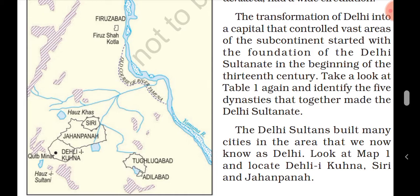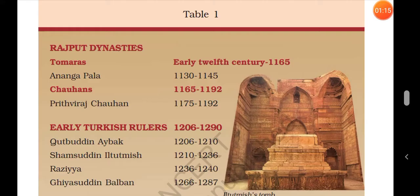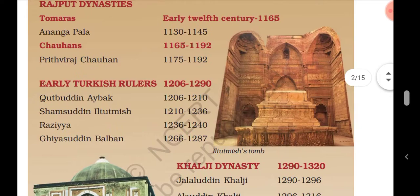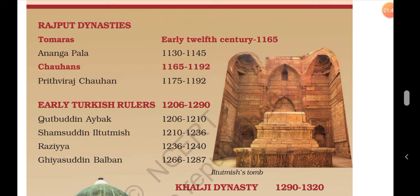Look at this map. Here you can see Delhi, Ikunha, Siri, and Jahanpana — these are some main cities built by the Delhi Sultans. There is also a table in your book, Table 1, which you have to make in your notebook. In this table you can see the names of those sultans who ruled over Delhi and the dynasties they established, which made lots of impacts on Delhi.